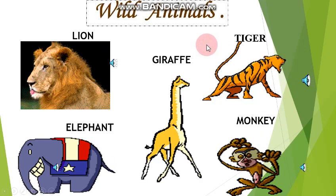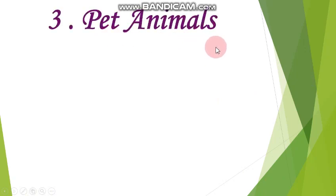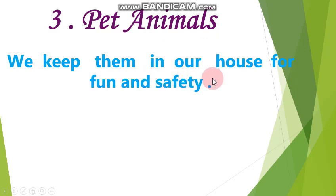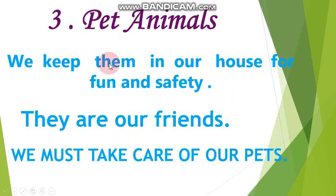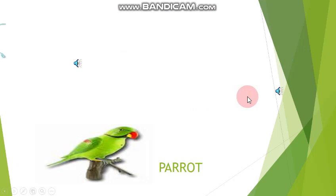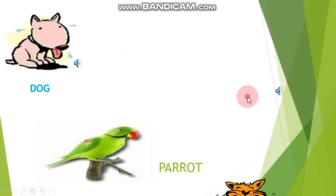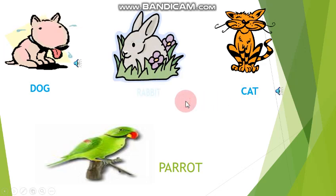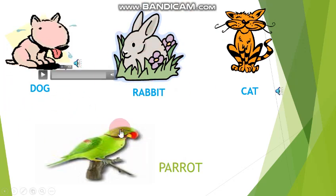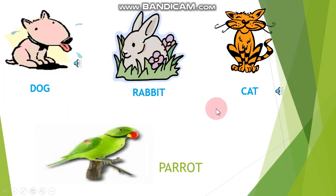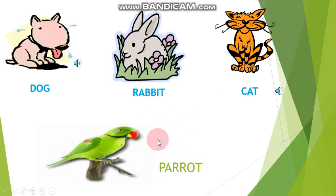Third, pet animals. We keep them in our house for fun and safety. They are our friends and they live with us. We must take care of our pets. Examples of pet animals include parrot, dog, cat, and rabbit. That's why we call them pet animals — we can keep them with us.